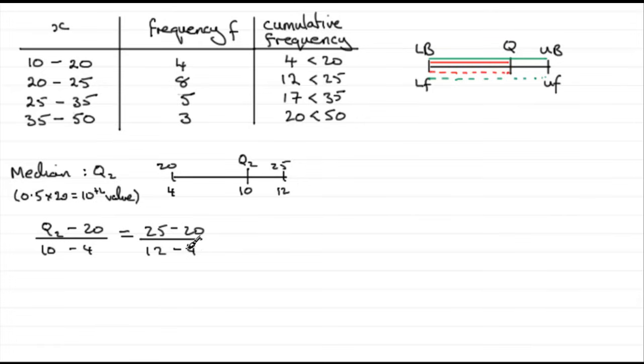All you've got to do now is just rearrange this. So if we wanted to work out what Q2 was, I'm going to cut out a few steps here. What we've got is 25 take away 20, which is going to be 5.